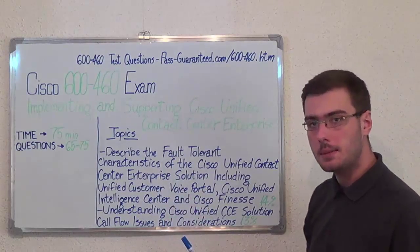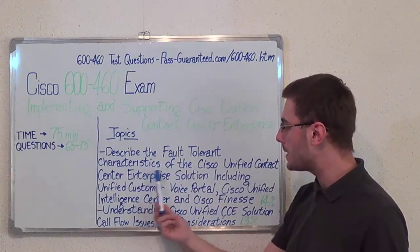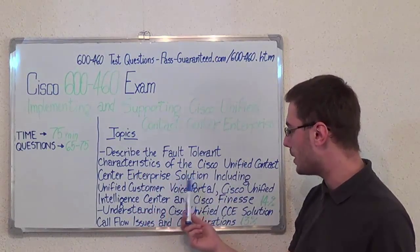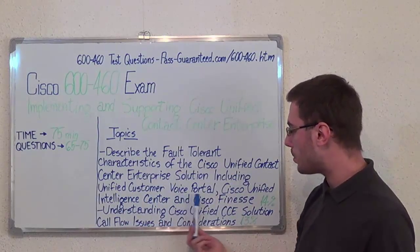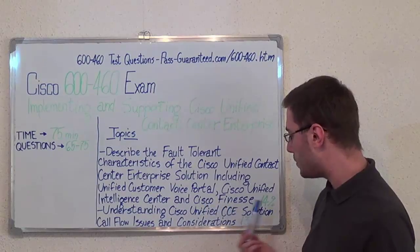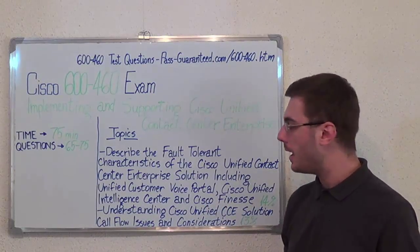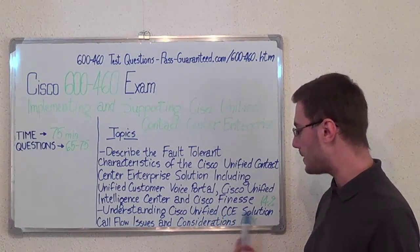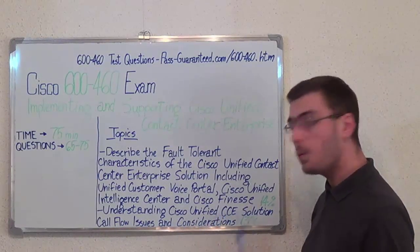Here we have some of the exam topics. The first one: Describe the fault-tolerant characteristics of the Cisco Unified Contact Center Enterprise solution, including Unified Customer Voice Portal, Cisco Unified Intelligence Center, and Cisco Finesse, which makes up 14% of the total amount of questions. And Understanding Cisco Unified CCE Solution Call Flow Issues and Considerations with 13%.